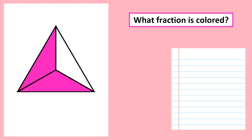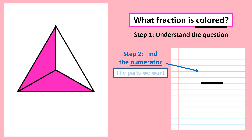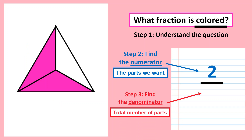Let's answer the next example. What fraction of this figure is colored? We want the colored parts only. Step two: find the numerator — how many colored parts? There are two colored parts, so we write two on top. Step three: find the denominator, the total number of parts. We count: one, two, three. So the denominator is three.